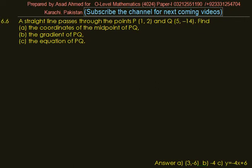Exercise 6.6: A straight line passes through the points P(1, 2) and Q(5, -14). Find: (a) the coordinates of the midpoint of PQ, (b) the gradient of PQ, (c) the equation of PQ. So P is given as (1, 2) and Q is given as (5, -14). Now we have to find the coordinate of the midpoint.